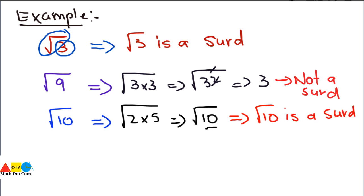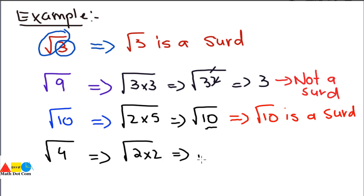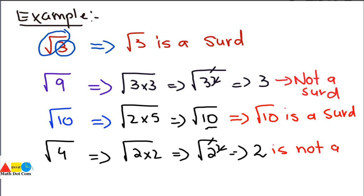Another example: square root of 4. We find its factors — square root of 4 equals square root of 2 squared. The square root and square cancel out, and we get 2. So, can we say that 2 is a surd? No, 2 is not a surd. I hope you understand the concept of a surd.